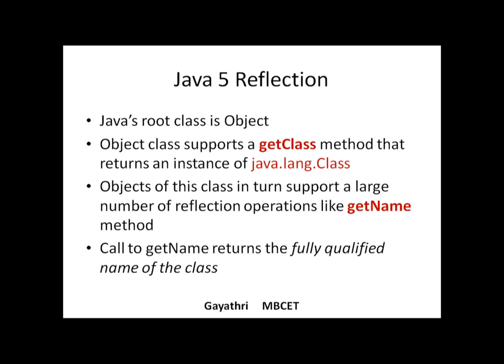In Java, the root class is Object. This Object class has support for a getClass() method which returns an instance of java.lang.Class. This getClass() method has a set of operations that support reflection. For example: getName() to get the name of the class, getDeclaredMethods() to get all methods declared inside that class, and getParameters() to get the parameters of a particular method.